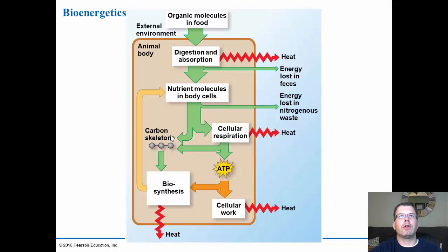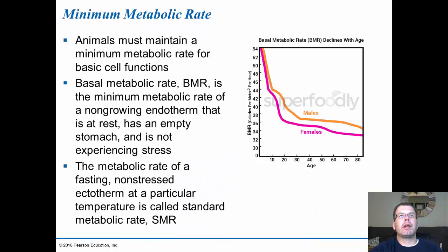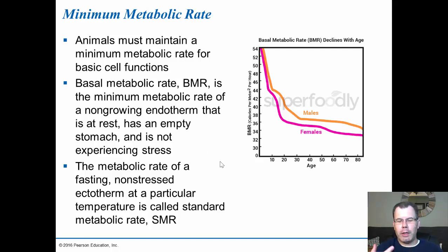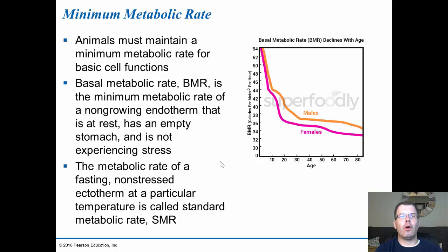The minimum metabolic rate for cell function is called the basal metabolic rate (BMR) — the minimum rate of a non-growing endotherm at rest, on an empty stomach, not experiencing stress. It's measured by fasting in adults. BMR represents what your body needs just to maintain basic cell functions — like a couch potato scenario. You must fast and be an adult not under stress to measure true BMR.